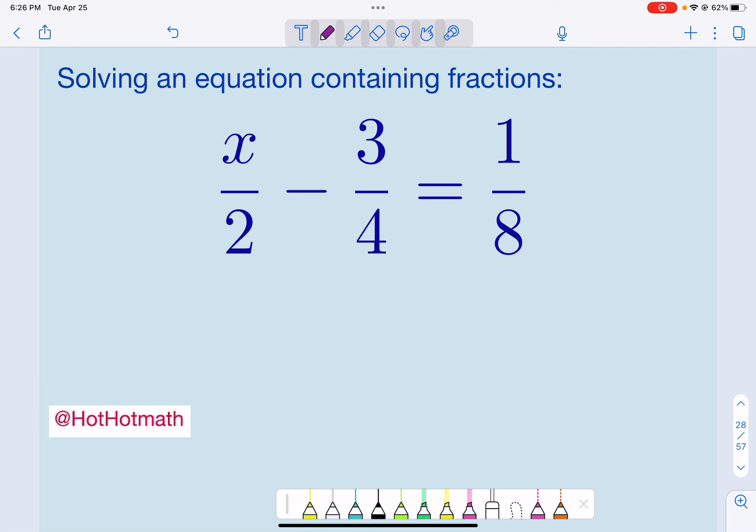One of the things I notice about this equation is we have fractions with three different denominators. And the key that's going to help us, can we figure out what the least common multiple of 2, 4, and 8 is?